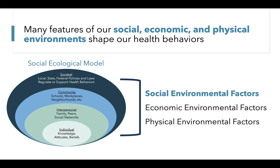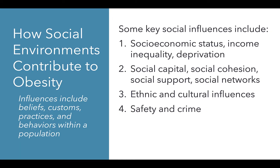Let's first talk about social environmental factors. Social environments include social influences that affect our beliefs, customs, practices, and behaviors within a social setting. Some key social risk factors include socioeconomic status, which describes the social standing or class of an individual group. Indicators of socioeconomic status include educational attainment, occupation, employment, and income. Our relative standing is affected by inequalities in income and experiences of deprivation. Social capital, social cohesion, and social support are all features of our social networks that influence our behaviors. There are also ethnic and cultural influences on our health behaviors and related attitudes, perceptions, and beliefs.